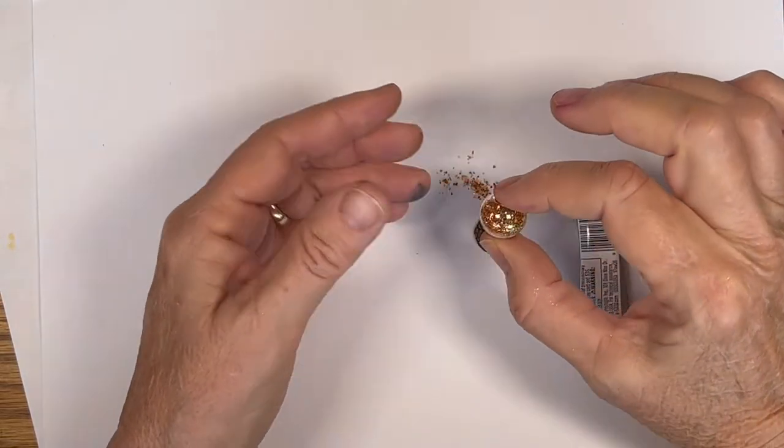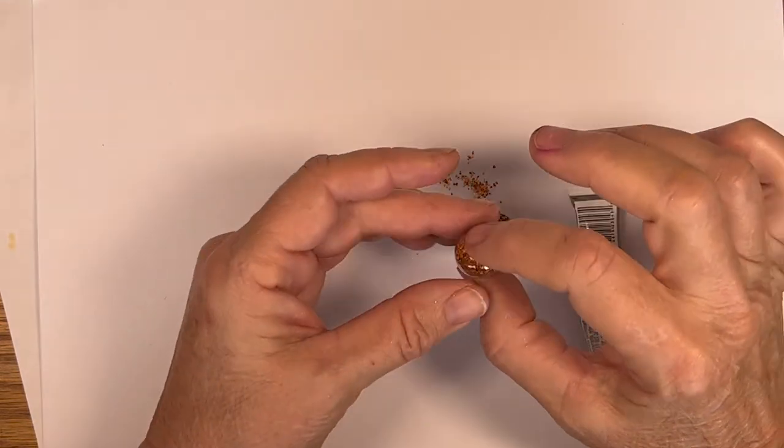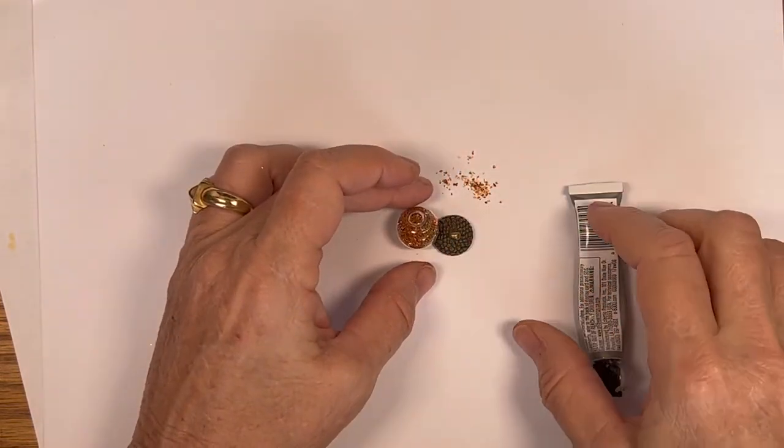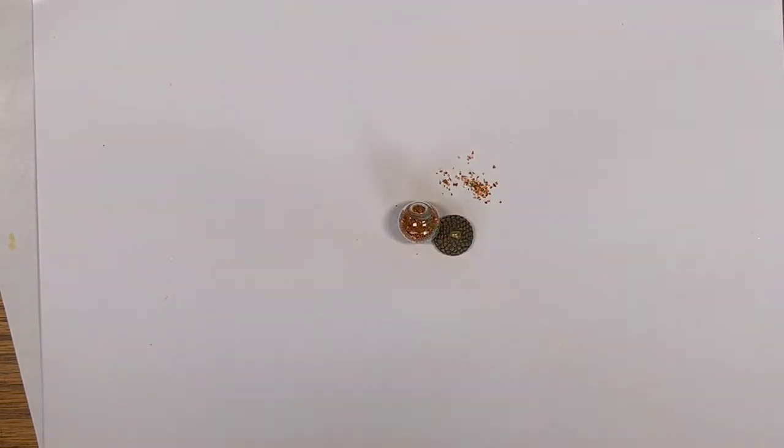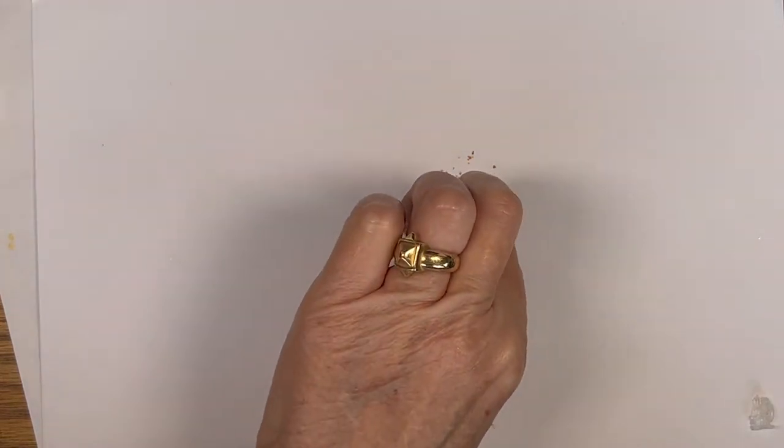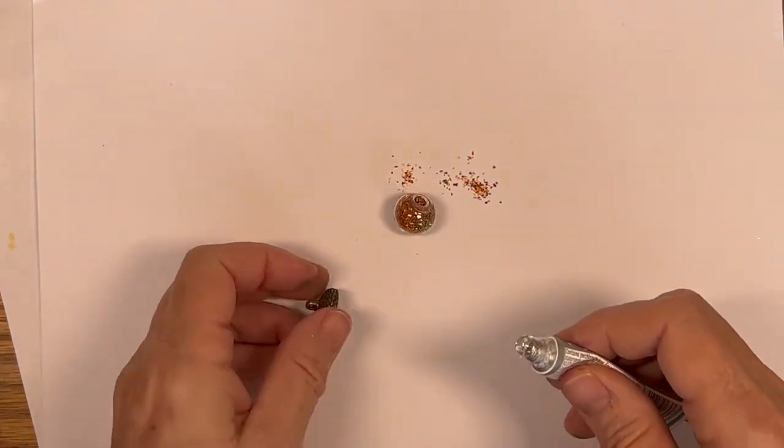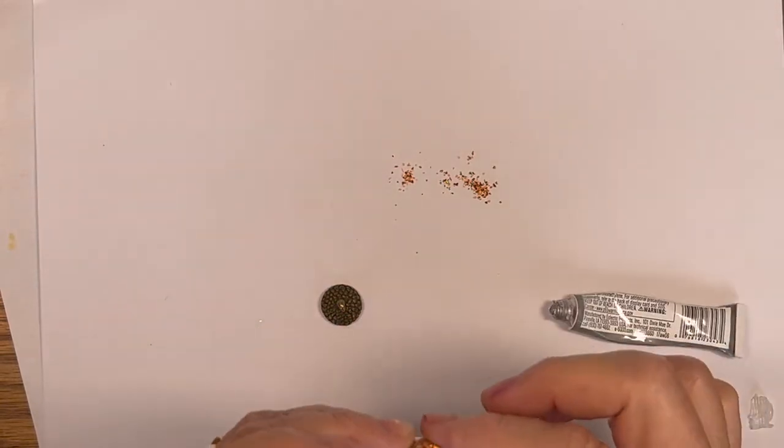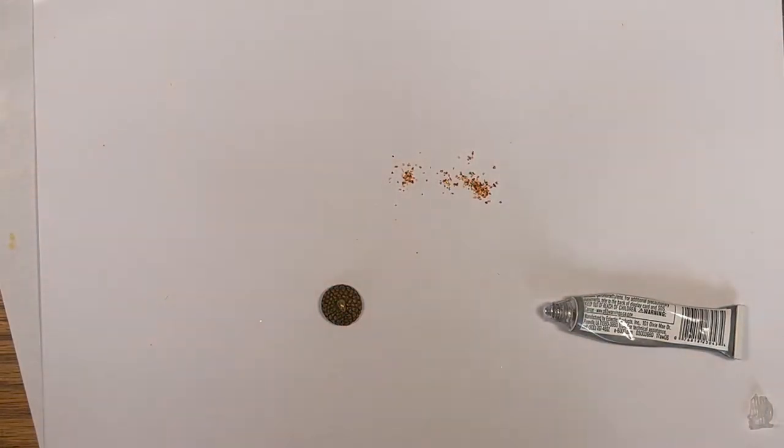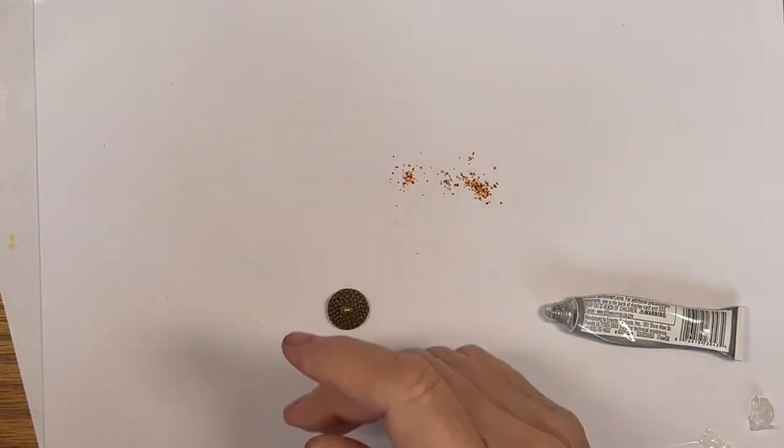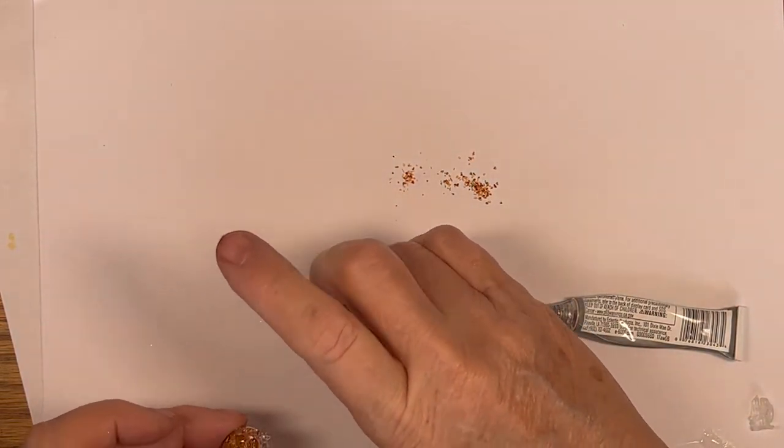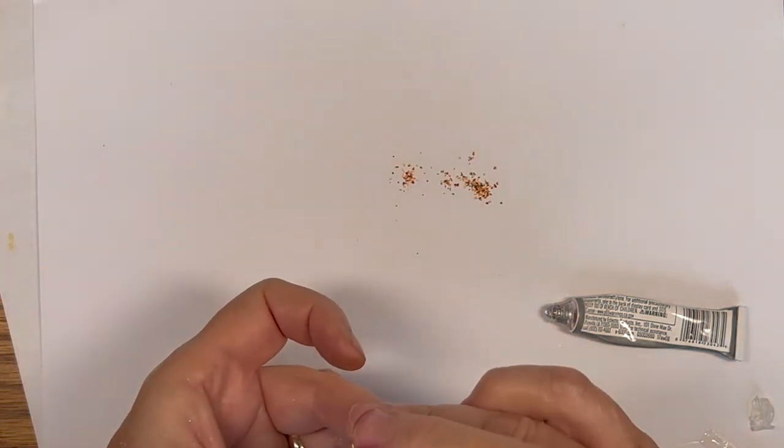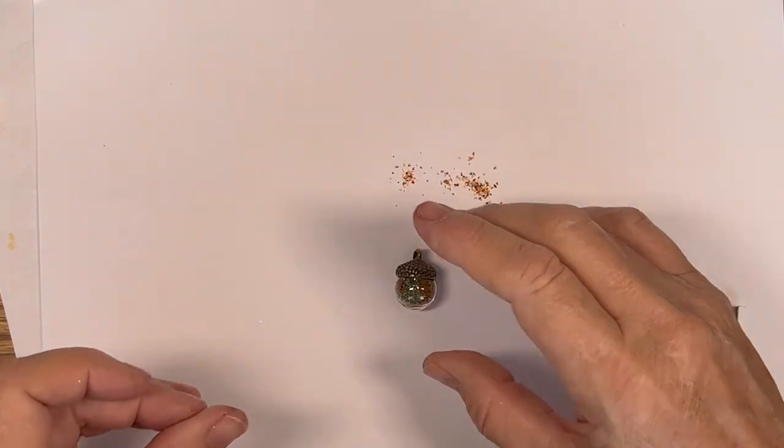On my site I carry these little glass globes that have a hollow top and they come with a little acorn cap in bronze. I filled this one up with glass glitter in an orange and a green, and then I'm going to run E6000 around this perimeter and put that on there and let that dry.